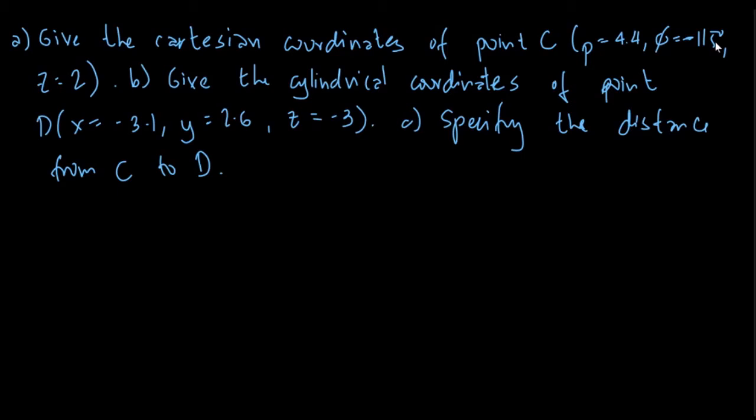For point D, X is equal to negative 3.1, Y is equal to 2.6, and Z is equal to negative 3. The last part of the problem is to specify the distance from C to D. So we have here our solution.